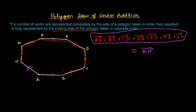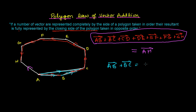In any polygon, no matter how many sides, the sum of all the sides taken in one order is given by the closing side in the opposite order. From the perspective of the triangle law, you can prove this easily. If you connect A and C, you get triangle ABC, and in that triangle taking two sides in order, the resultant is the third side — so AB + BC = AC.